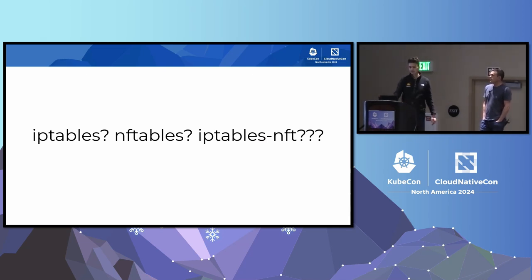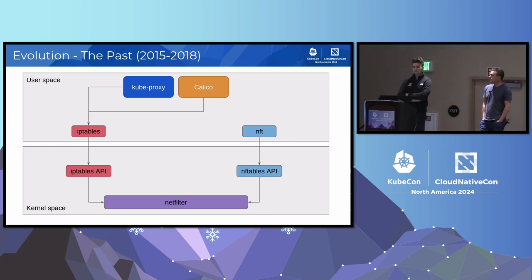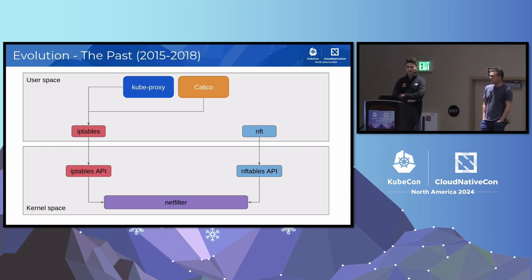A lot of terms get thrown around here. There are iptables, nftables, even iptables-nft. Both iptables and nftables are tools that allow you to configure networking in Linux. They're both primarily split into two parts: an API component that exists within the kernel, and a user space component — a tool that applications can use to read state from the API and write configuration back. Under the hood, both of them are configuring Netfilter, which is the primary packet manipulation system within the Linux kernel.